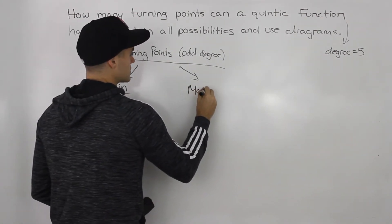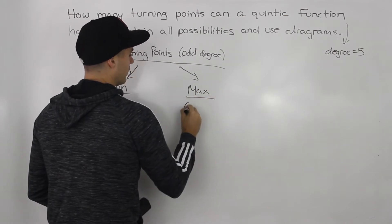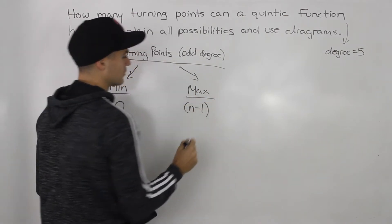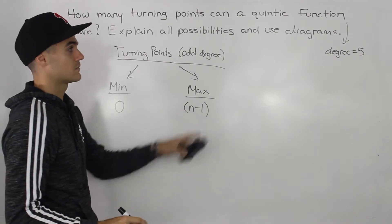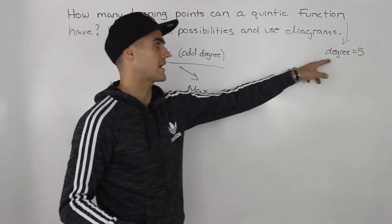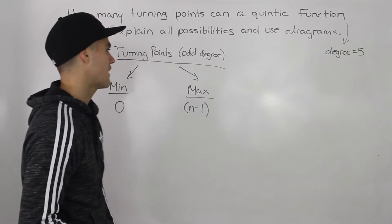What's the maximum number of turning points it can have? Well, n minus one, or the degree minus one. So a quintic function, the maximum number of turning points it can have is five.